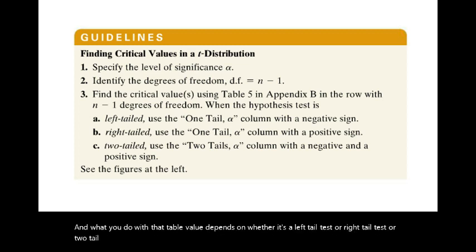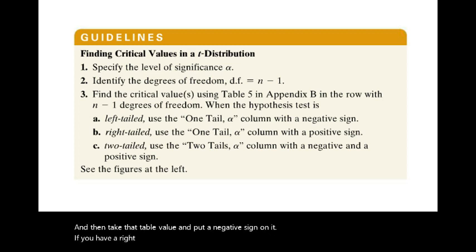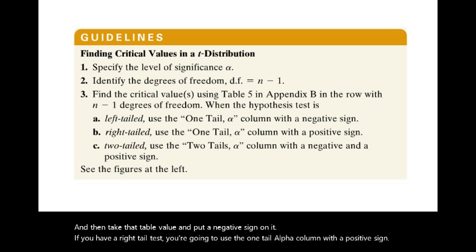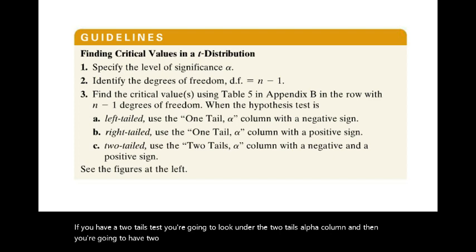If you have a left tail test, you're going to look in the one tail alpha column and then take that table value and put a negative sign on it. If you have a right tail test, you're going to use the one tail alpha column with a positive sign. If you have a two tails test, you're going to look under the two tails alpha column, and then you're going to have two critical values — one with a negative sign and one with a positive sign.